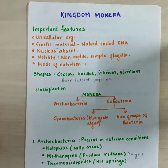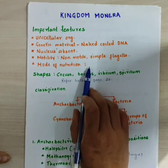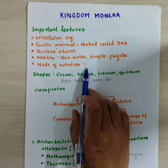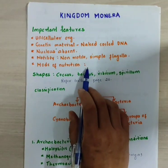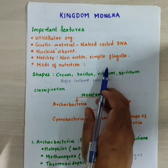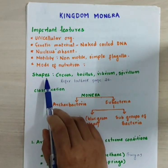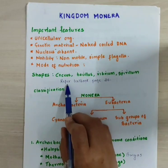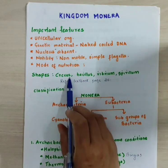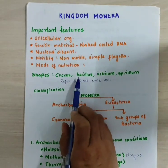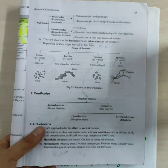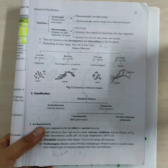Mode of nutrition — you have already written this down in your notes. The shapes of Kingdom Monera are coccus, bacillus, vibrium, spirillum, and others. For reference, refer to textbook page 25. Coccus is one shape, bacillus is another, and so on.